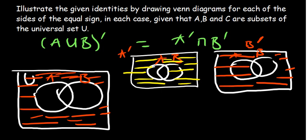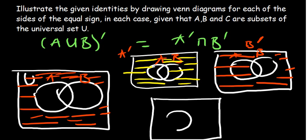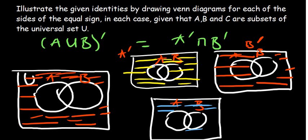When we say A complement intersection B complement, what region is common between the two that we've shaded? The common region is basically just the region outside both sets, which matches up with the first diagram on the left hand side. So we've shown the first De Morgan's law.